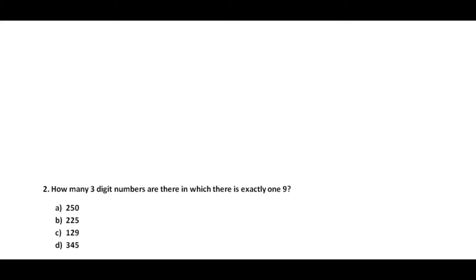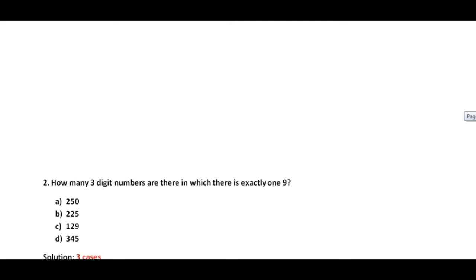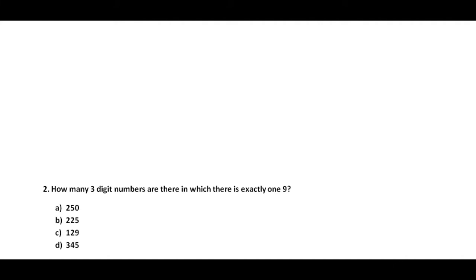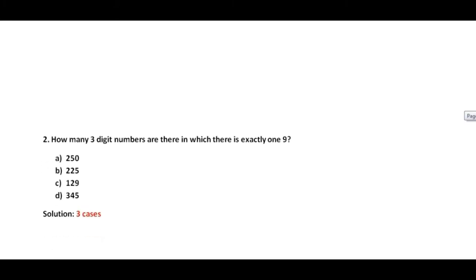Next question: how many three-digit numbers are there in which there is exactly one 9? By exactly one 9, I mean that the 9 can be at the units place, the tens place, or the hundreds place, but there has to be only exactly one 9 in that number. This is a type of question where we are explicitly being asked not to repeat the digit 9. So here there will be three cases.